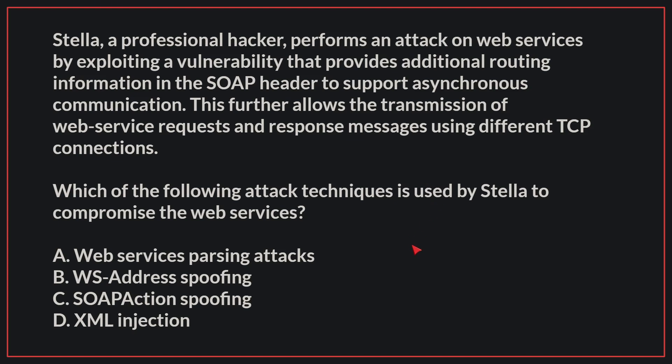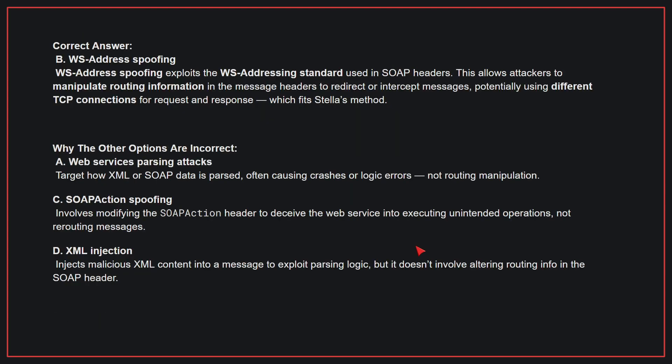The correct answer is B, WS-address spoofing. WS-address spoofing exploits the WS-addressing standard used in SOAP headers. This allows attackers to manipulate routing information in the message headers to redirect or intercept messages, potentially using different TCP connections for request and response, which fits STELLA's method.